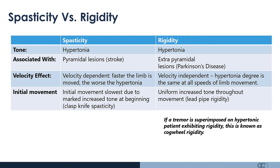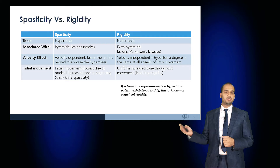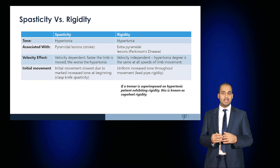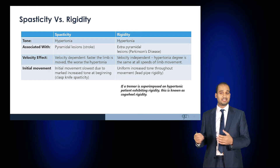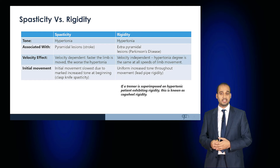Spasticity involves an initial movement that is slowest due to a more marked increase in tone at the beginning of movement — this is clasp-knife spasticity. Whereas in rigidity, there is uniform tone throughout the movement, known as lead-pipe rigidity.